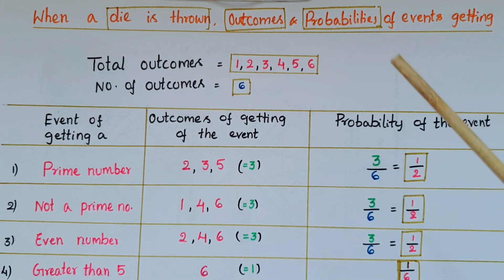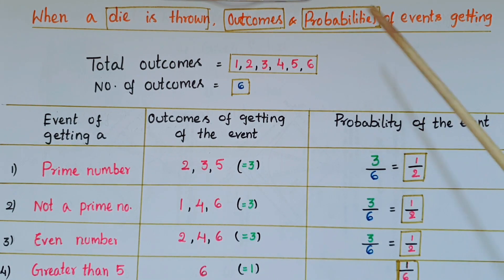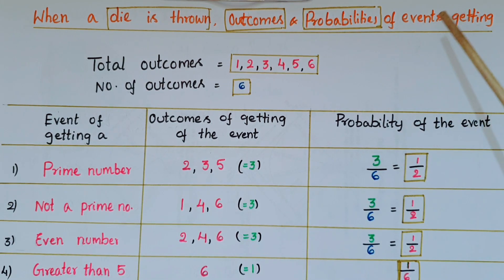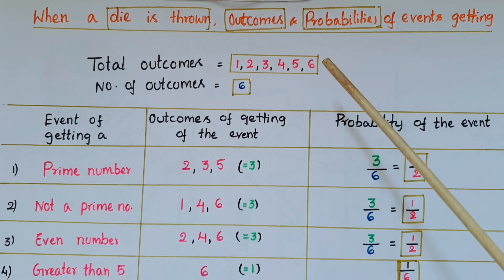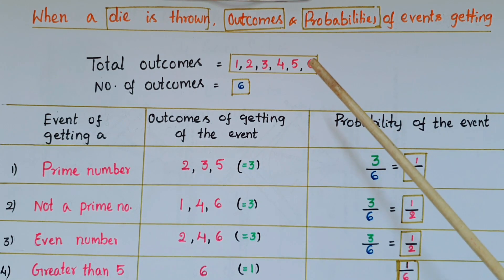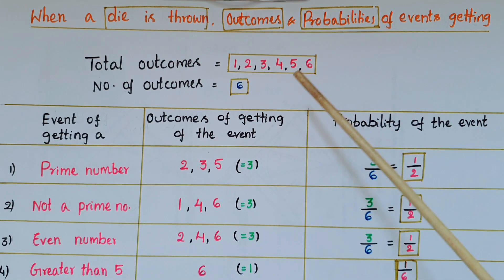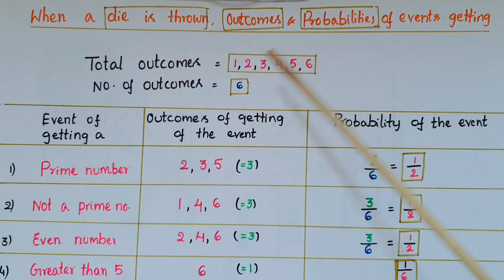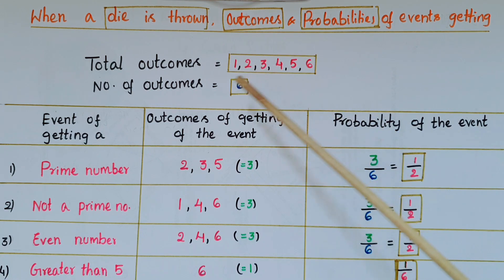Hello everyone, today I am going to tell how to find outcomes and probabilities of events when a die is thrown. We know that outcomes when a die is thrown are 1, 2, 3, 4, 5, 6. So the number of outcomes here are 6.